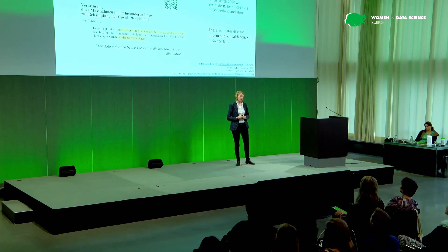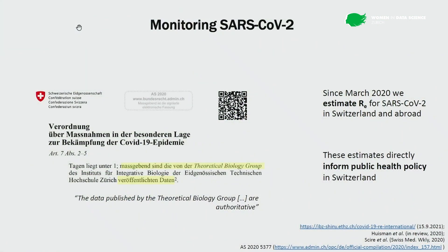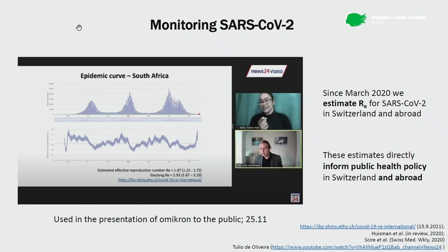In Switzerland, this directly influenced public health policy, even leading to an infamous moment around December 2020 where the opening and closing of certain establishments like restaurants was directly tied to the estimates we put out on our dashboard. More recently, these estimates were also used when Omicron was first presented to the public. The primary country outside Switzerland using our estimates was South Africa, because we integrated information on different provinces there relatively early on. I want to briefly present this pipeline and give some intuition for how we estimate R_E, including an extension to environmental data.